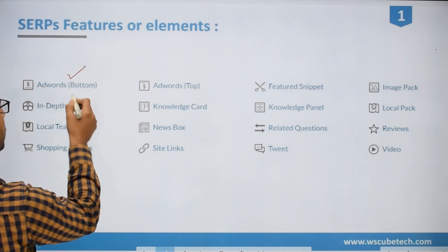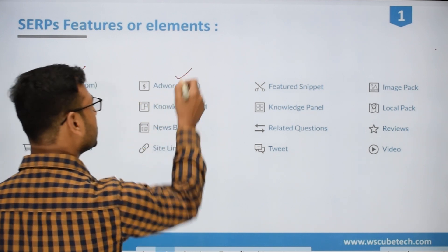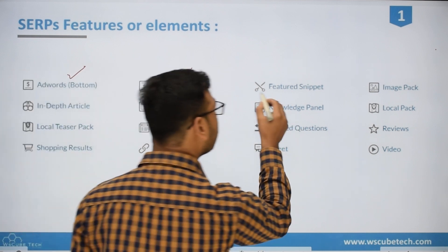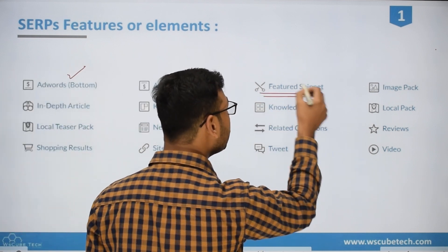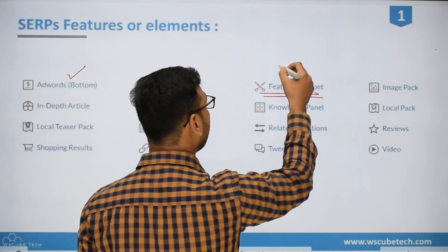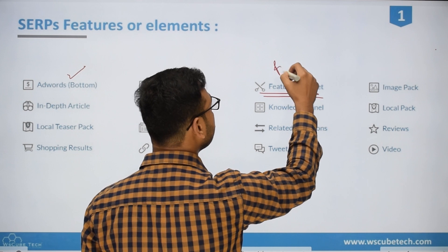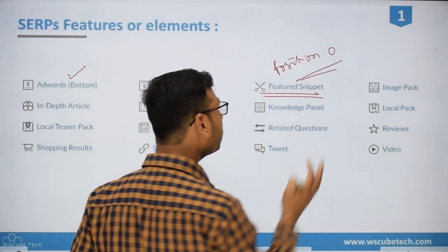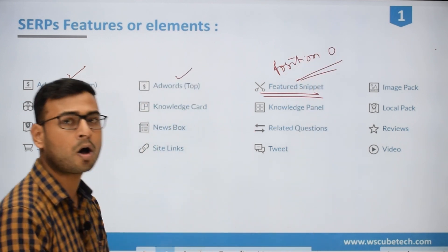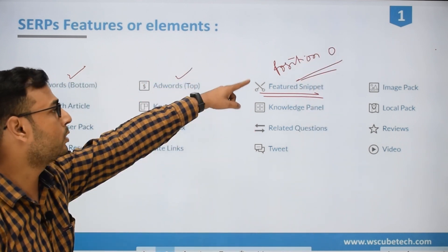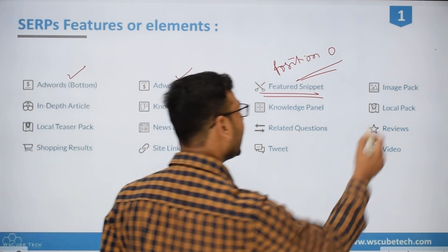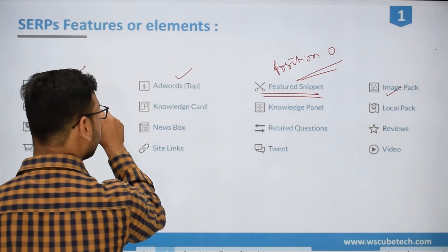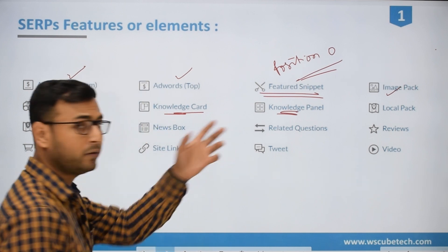The first ones are AdWords bottom and AdWords top, which we all know. Then the second thing is featured snippet, which we also call position 0. It is called position 0 because it actually comes above the organic results. Then we have image pack, in-depth article, knowledge card, and knowledge panel.